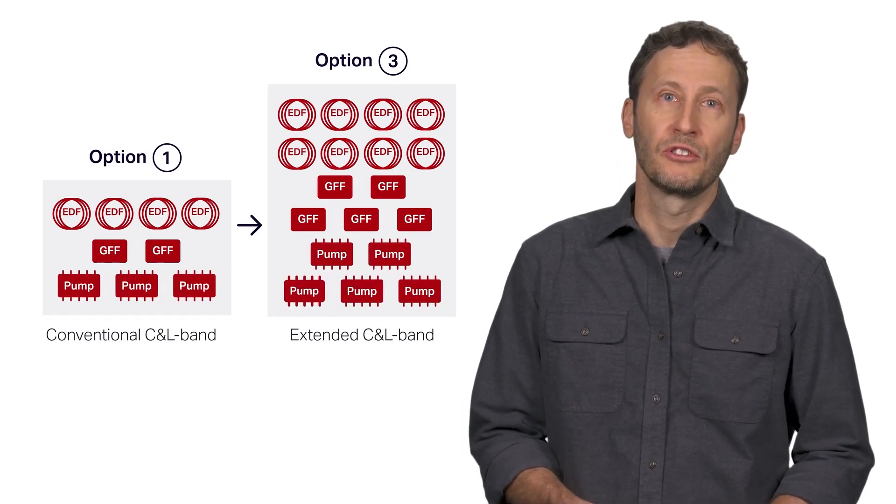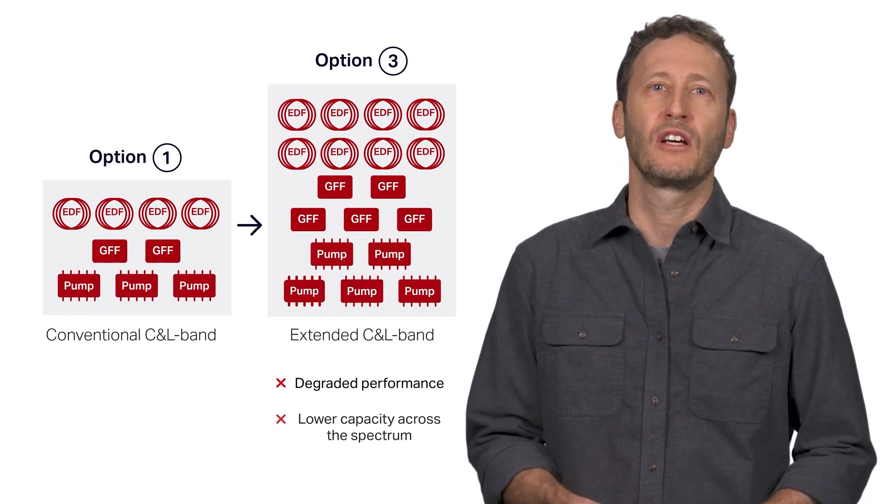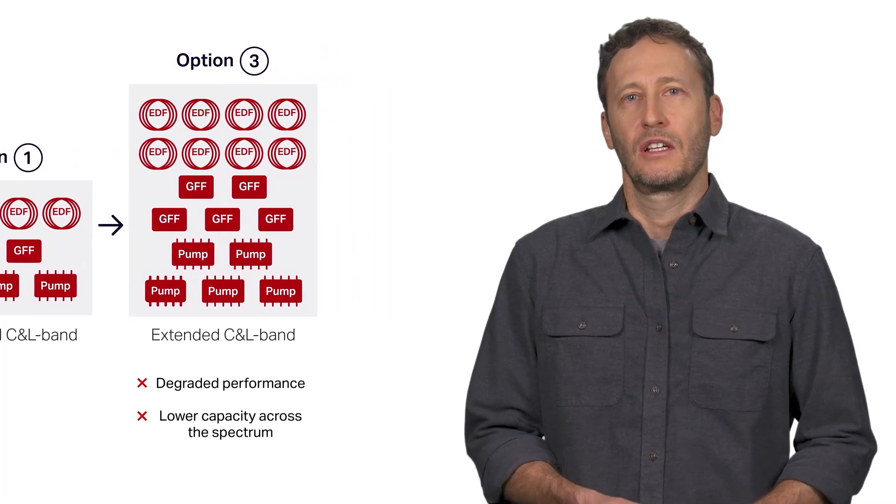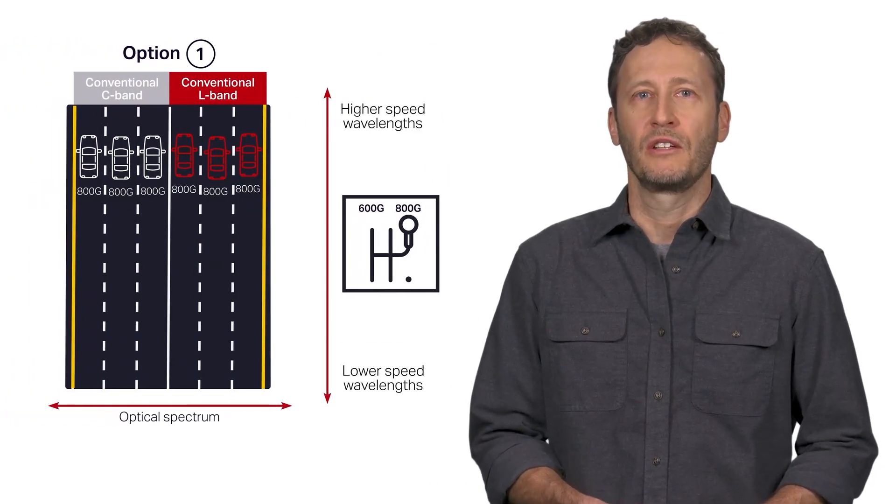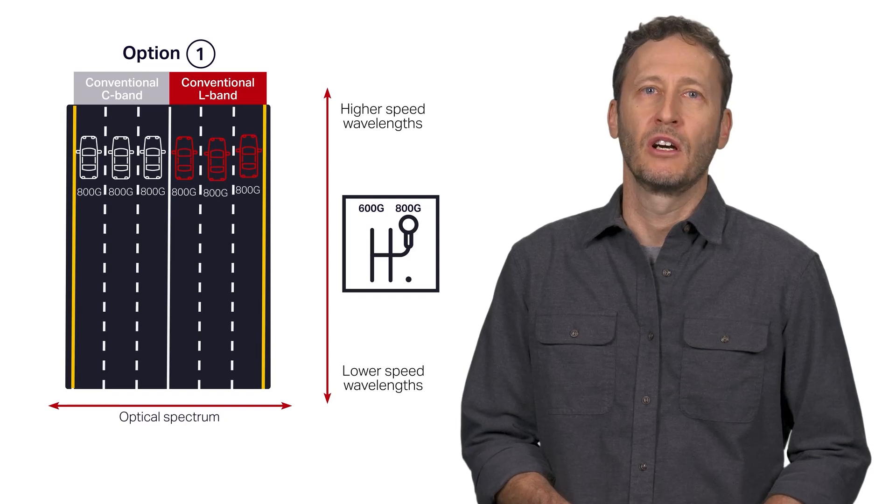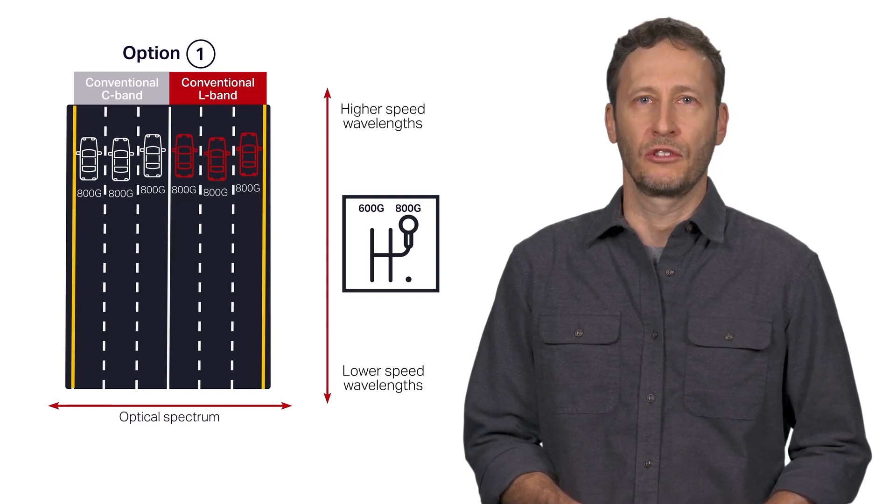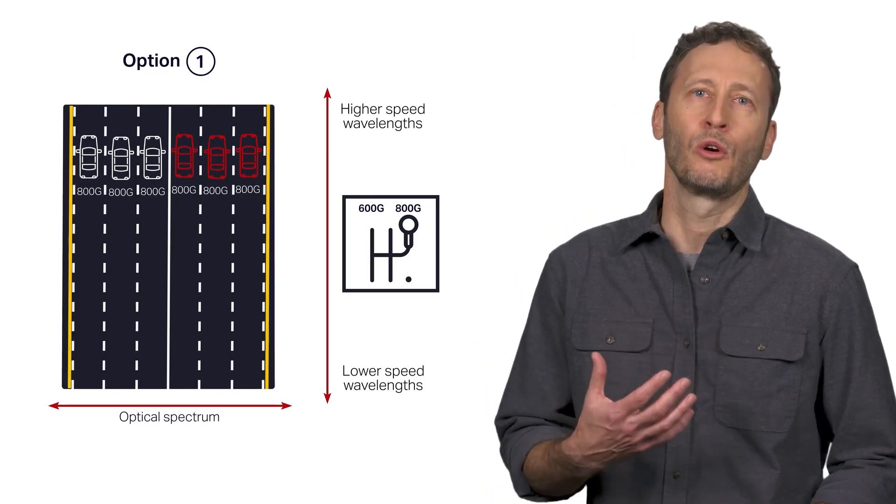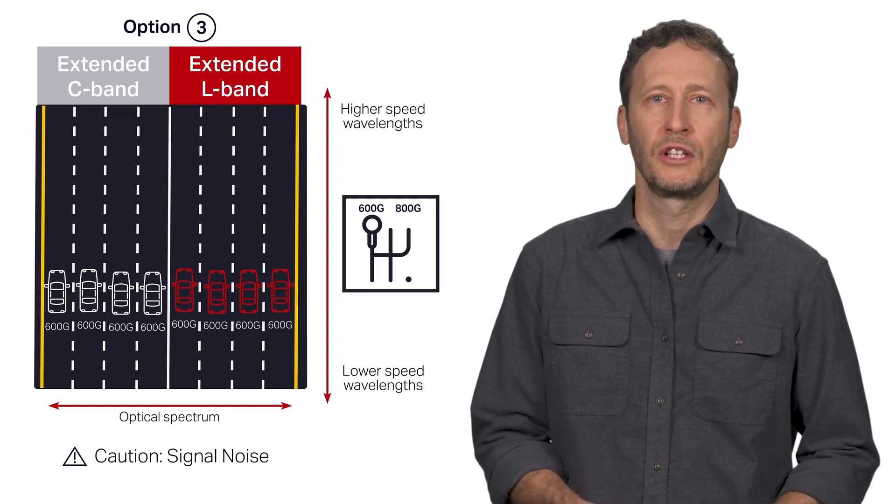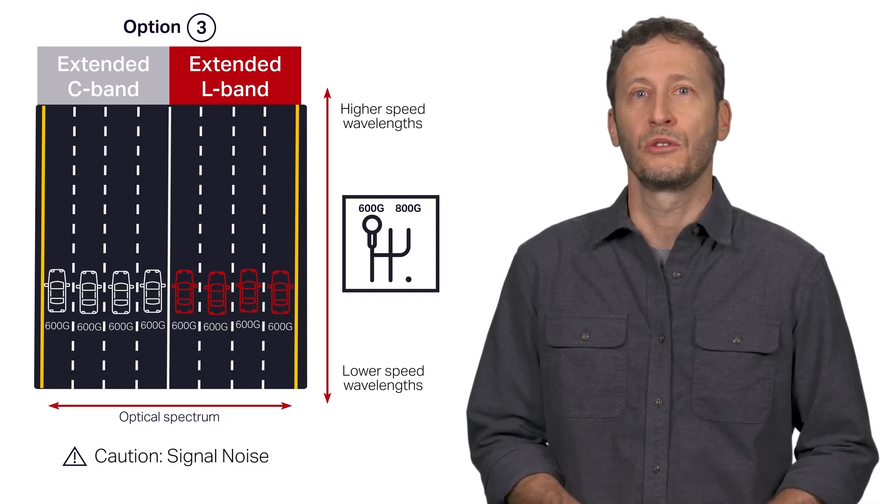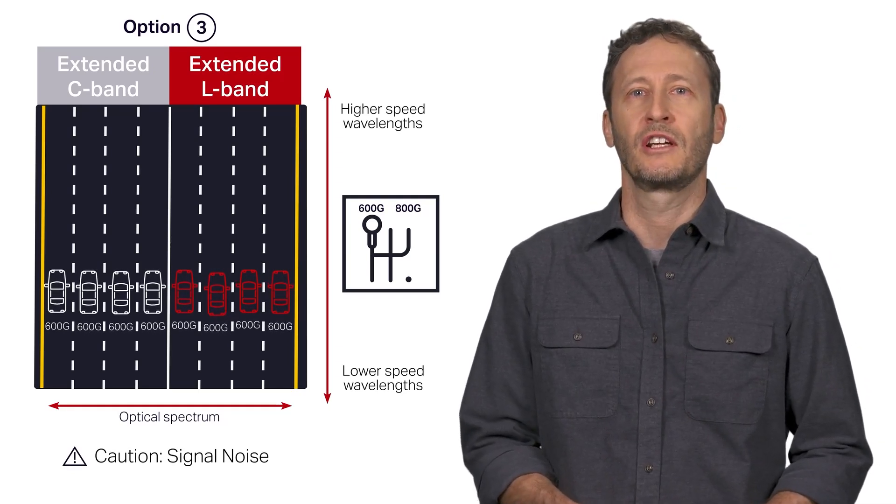This inefficiency results in degraded performance that penalizes capacity across the spectrum. This effectively cancels out much of the benefit that comes from widening the bands beyond the conventional 9.6 terahertz. Coherent modems are forced to downshift to a lower rate to tolerate the extra noise, which in turn reduces the overall spectral efficiency at a network level.